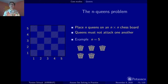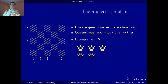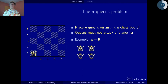Now let's look a little bit at how this works to get a feeling for the problem. I just proceed row-wise, putting a queen in one row after another. So the first queen I put in position 1-1.